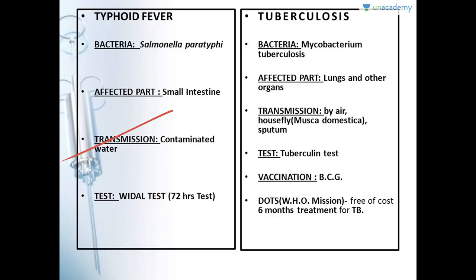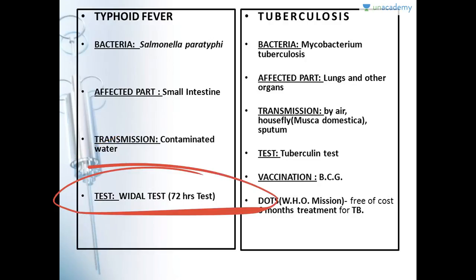Transmission of typhoid is by contaminated water. If you eat or drink at unhygienic places, it is highly likely that you may get typhoid fever. That is why it is always advised to eat or drink at hygienic places. The test for typhoid fever is the Widal test. It takes 72 hours to get completed, though with modern technology the time has reduced considerably.